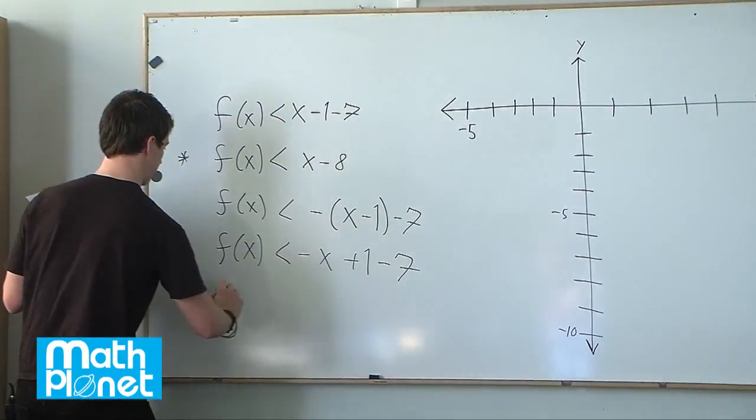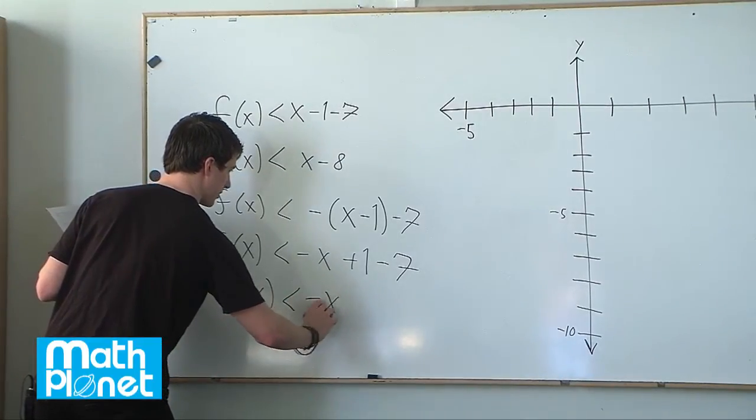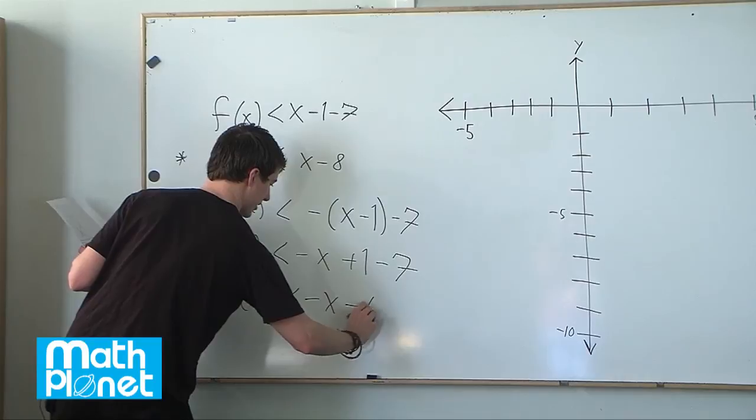And then this can simplify to f(x) is less than negative x and then we have minus 6.